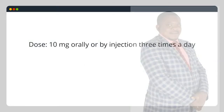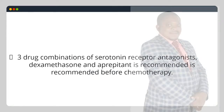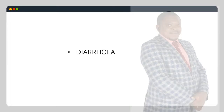Administer prescribed anti-emetic drugs prophylactically prior to chemotherapy, such as metoclopramide (Maxalon), to decrease vomiting caused by chemotherapy. Dose: 10 mg orally or by injection 3 times a day. Side effects: acute dystonic reactions involving facial and skeletal muscle spasms and oculogyric crises. A three-drug combination of serotonin receptor antagonists, dexamethasone and aprepitant is recommended before chemotherapy.